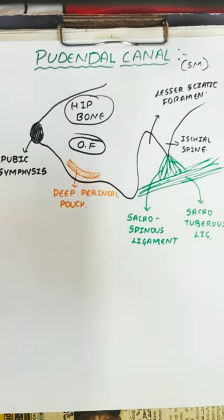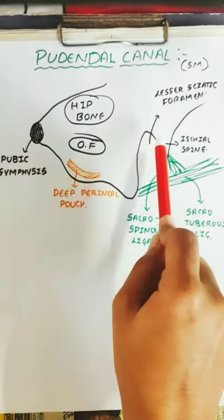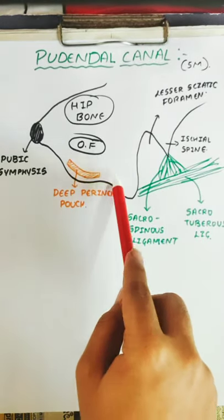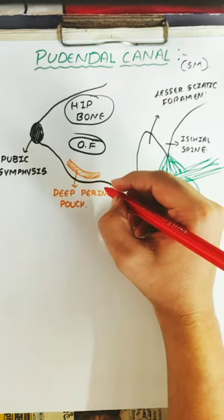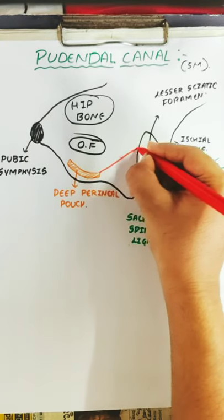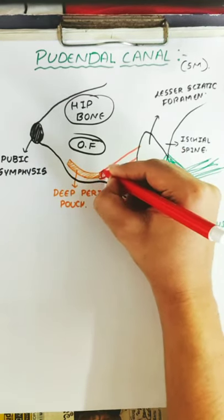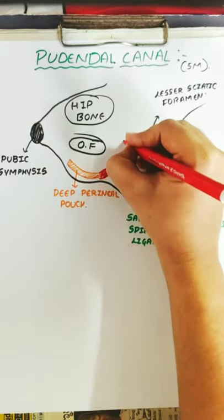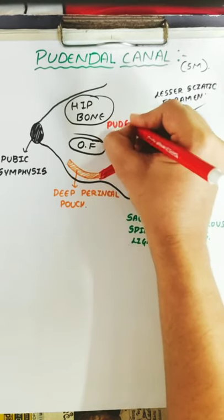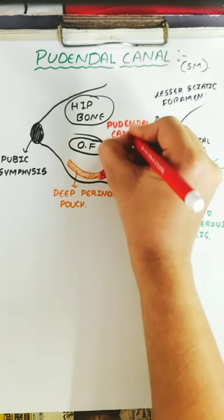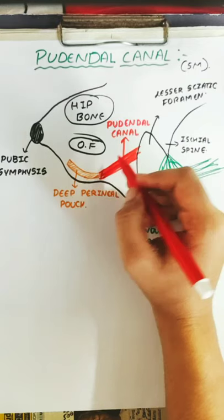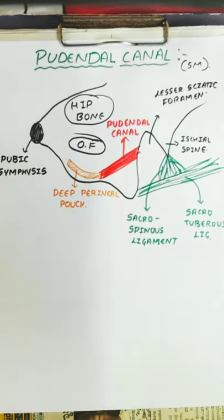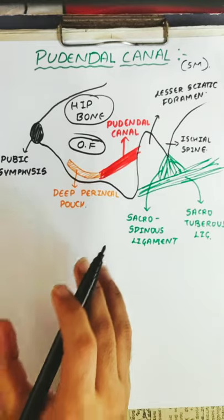Now we'll see where the pudendal canal is present. It extends from the deep perineal pouch till the lesser sciatic foramen. I'll do a small diagrammatic representation so that you can understand better. This is the pudendal canal — it extends from the deep perineal pouch till the lesser sciatic foramen. This is the diagrammatic representation of the pudendal canal.